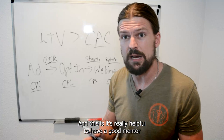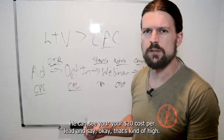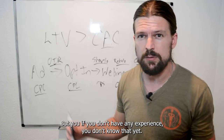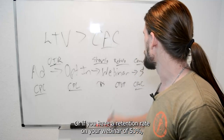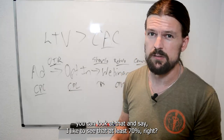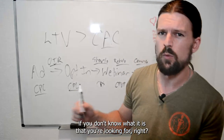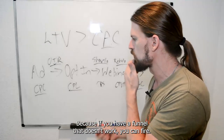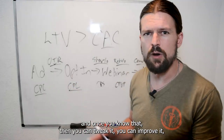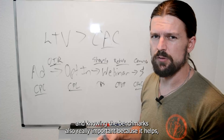Having a good mentor who understands your business model is really helpful because the mentor already knows the benchmarks. They can see your $20 cost per lead and say, 'That's kind of high — I'd like to see it below $10.' Or they can see a 50% webinar retention rate and say, 'I'd like to see that at least 70%.' These numbers are kind of useless without a frame of reference. If you know the benchmarks, you can look at each step and figure out which one is subpar, then tweak and improve it.